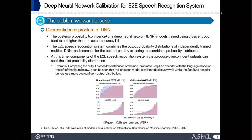First, we are defining the problem we want to solve. There are some overconfident problems in E2E models. The posterior probability of the neural network models, estimated using cross-entropy, tends to be higher than the actual accuracy, as can be seen in this figure.